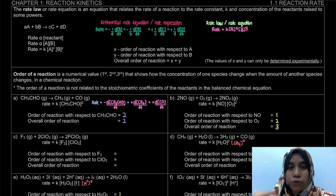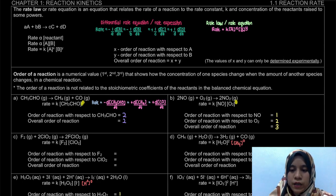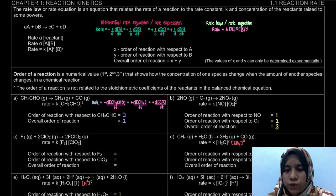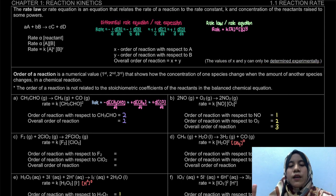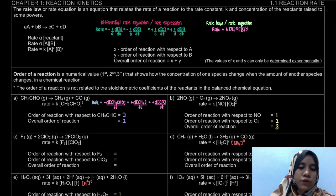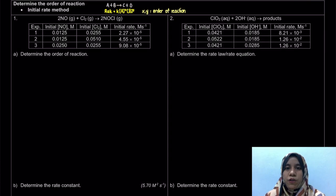The example on page 3 - from the rate law, it is given to you what is the order of reaction, be it 0, 1, or 2. But for this question, we're going to determine the values of x and y, which can only be determined experimentally. From the values from the experiment, we can determine the order of reaction. So now let's determine the order of reaction by the initial rate method.